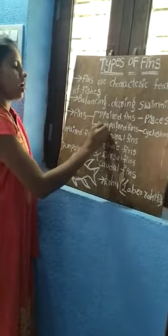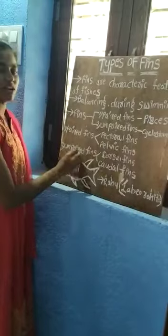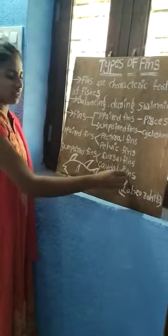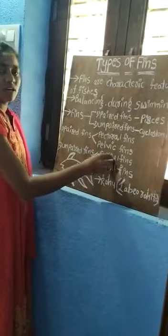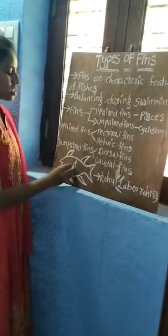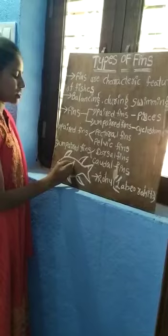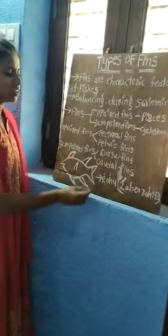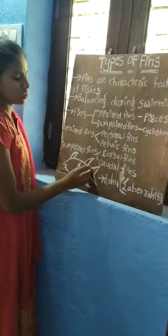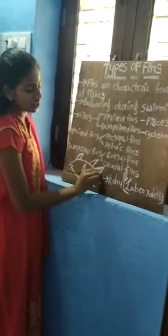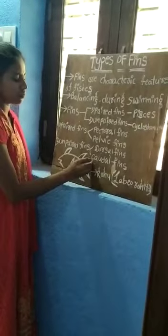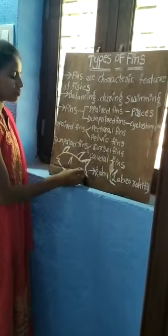Unpaired fins are of two types: they are dorsal fins and caudal fins. Dorsal fins are the fins present on the dorsal side of the fish. Caudal fins contain only one fin, located at the tail. These are called caudal fins.